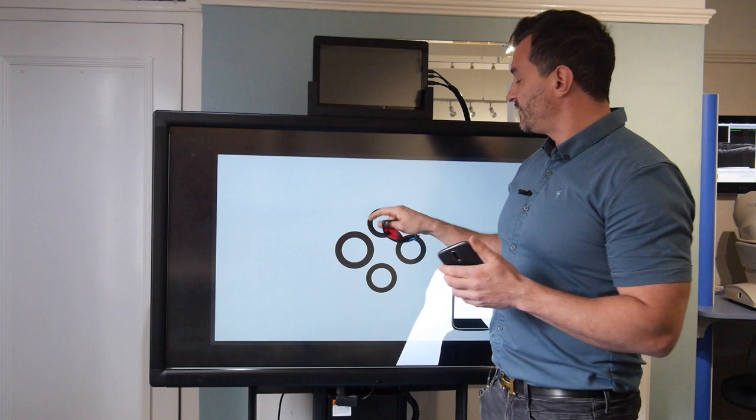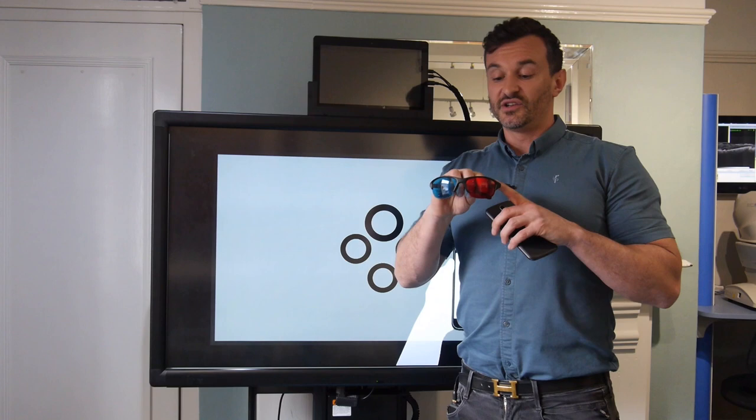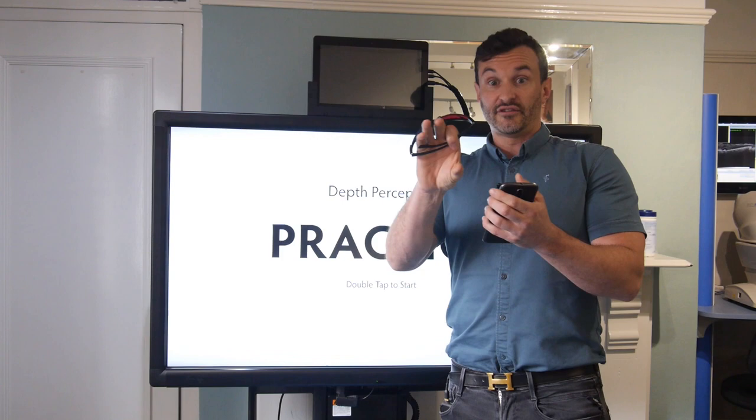And the way this works is once we go through the demonstration video, you'll see that one of the circles has got a red ring around it and a blue ring. So in this case, if I was wearing the glasses, my left eye would see the red ring, my right eye would see the blue ring, and then I would see that 3D stereoscopic image.